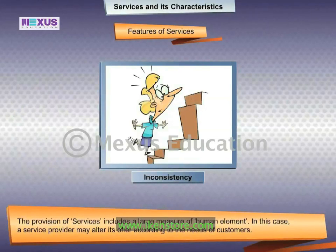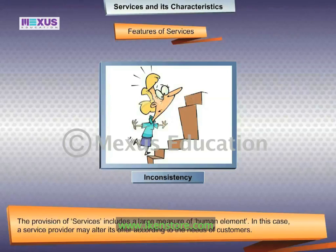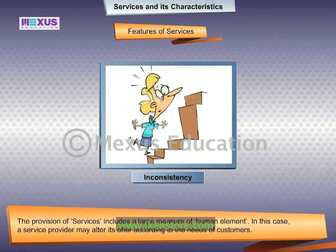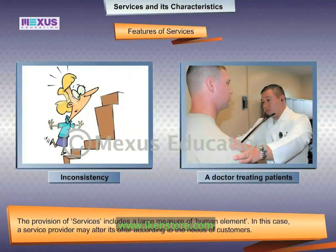Inconsistency: the second important characteristic of services is inconsistency. The provision of services includes a large measure of human element. A service provider may alter its offer according to the needs of customers — for example, a doctor treats his patients according to their problems.